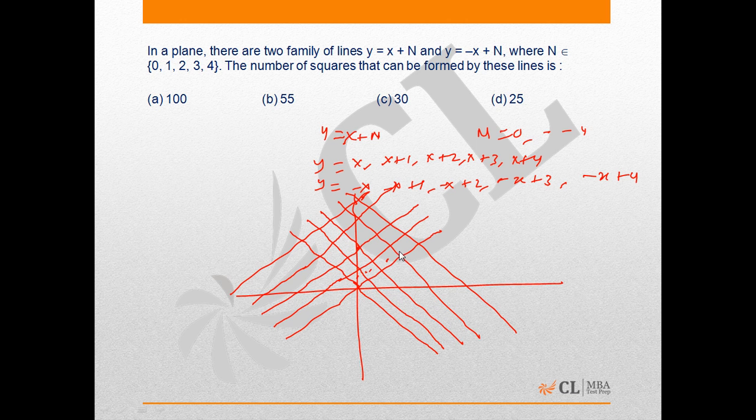Like individual squares which are 16 in numbers, and the squares that comprise 4 smaller squares, these are 9 in number, like we can see here: 2nd one,